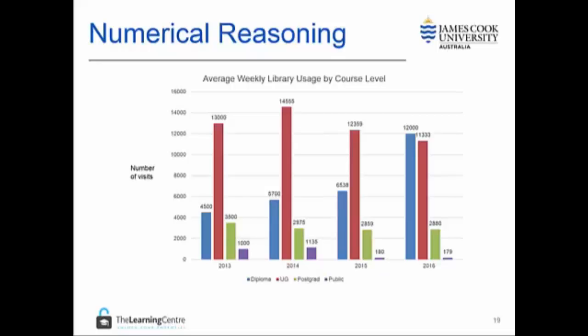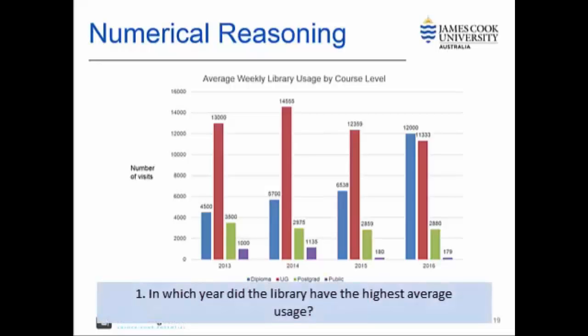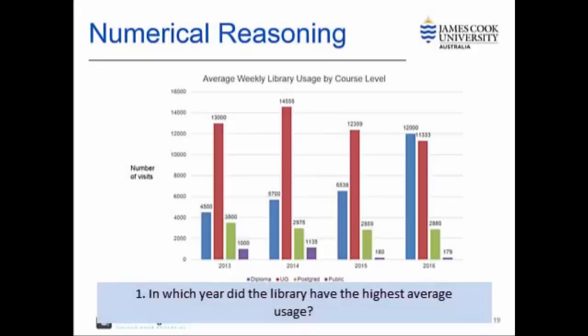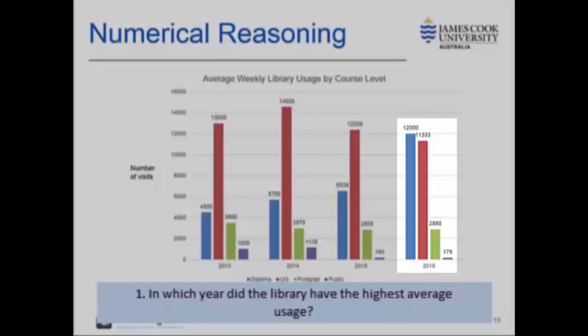Let's turn to the third example. The first question asks in which year did the library have the highest average usage. A superficial glance at the graph might suggest 2014 as the highest column is in that time frame. However, if we understand that the column headed 14,555 is only one category within the time frame, we realize that is a mistake. By adding together the categories within each time frame, it can be easily seen that 2016 has the highest number of usages.